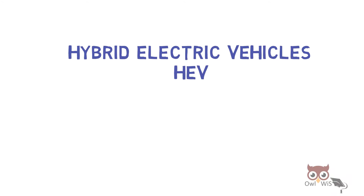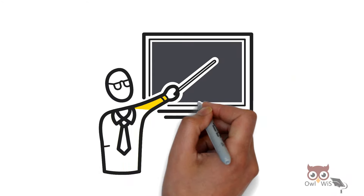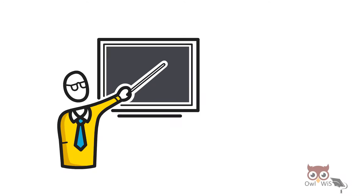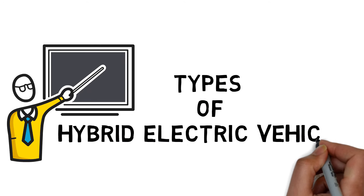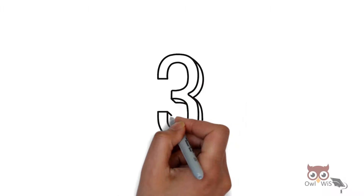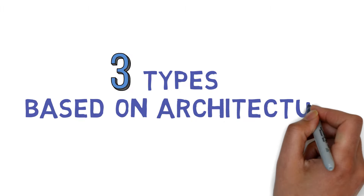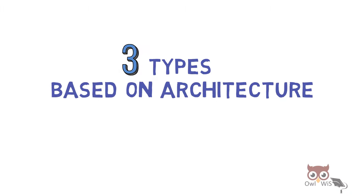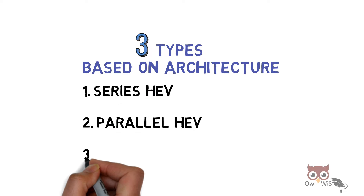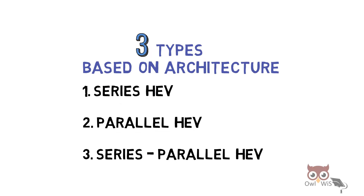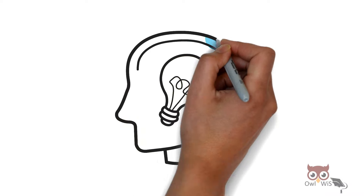Hybrid Electric Vehicles. Let us find out in this video the types of hybrid electric vehicles. They are classified into three types based on architecture: first, series HEV; next, parallel HEV; and series-parallel HEV. Let us understand each one of them.